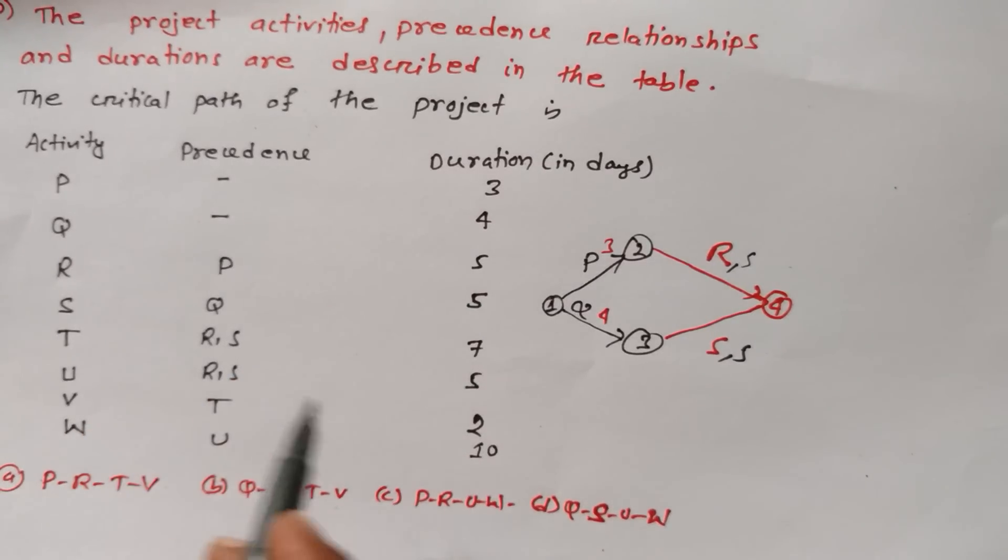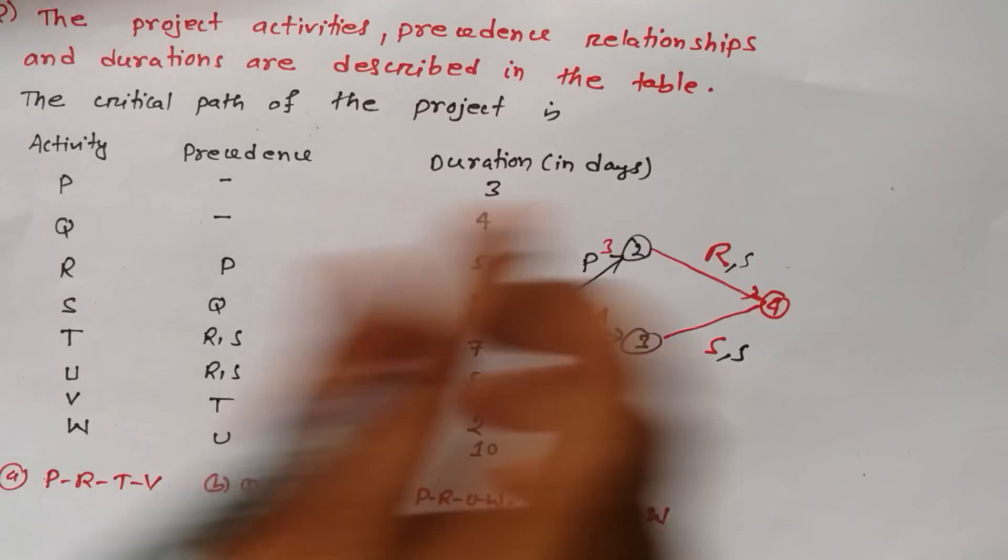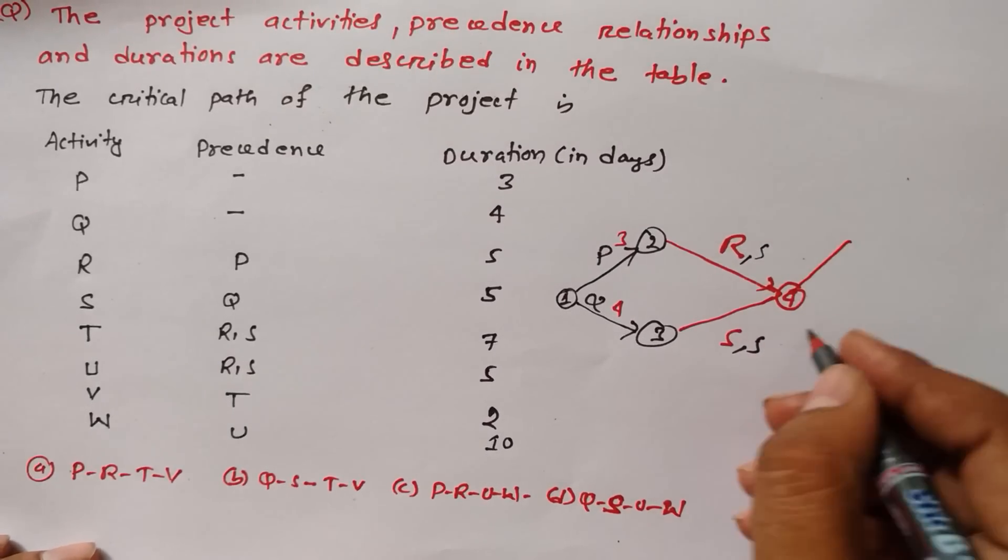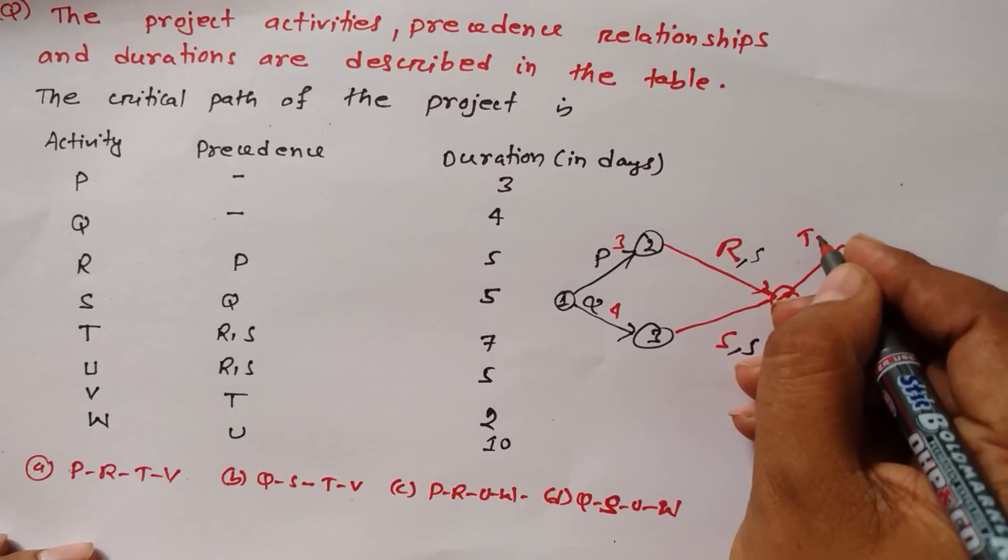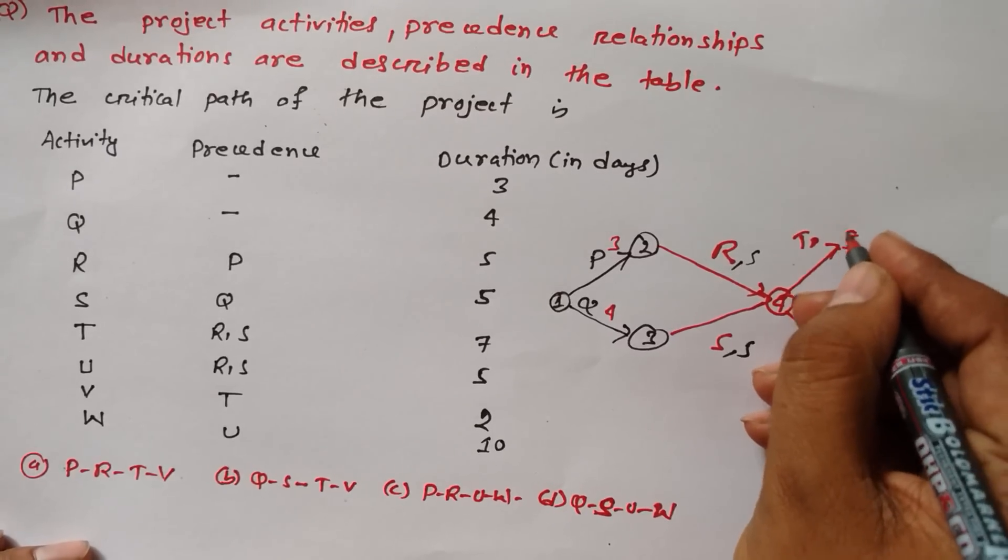Now from R and S we are getting two activities T and U. Again we are getting two activities T and U. Suppose this is T and this is U, five and six.